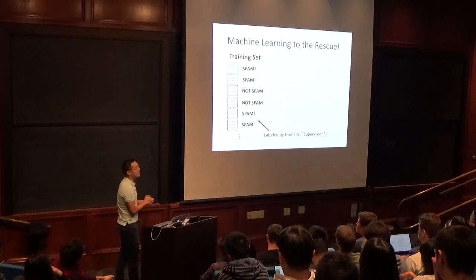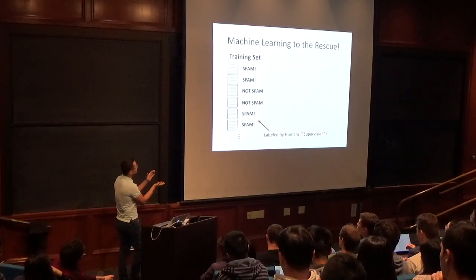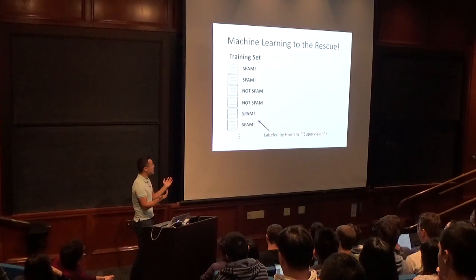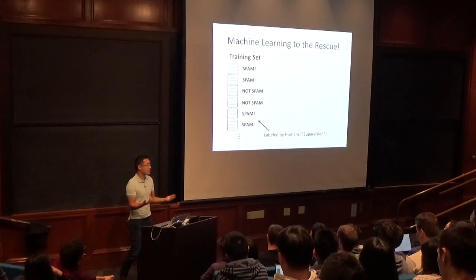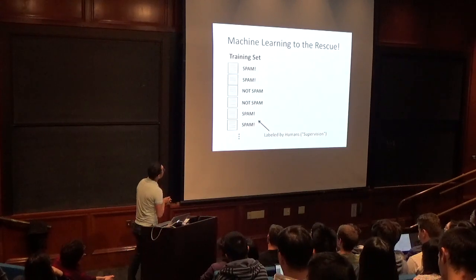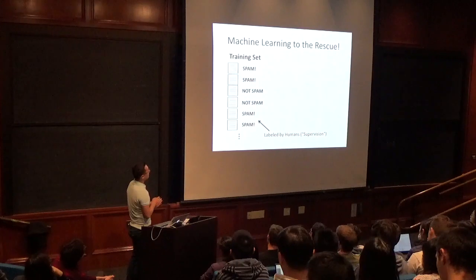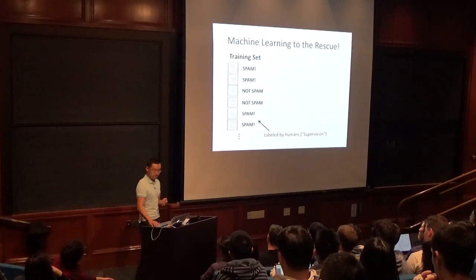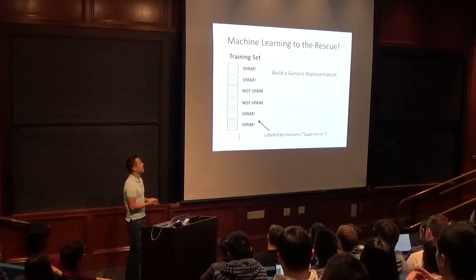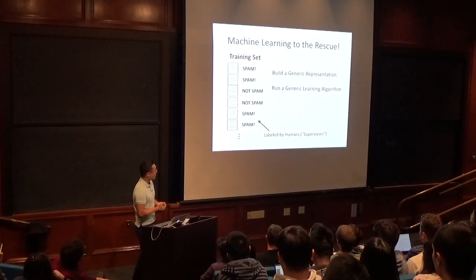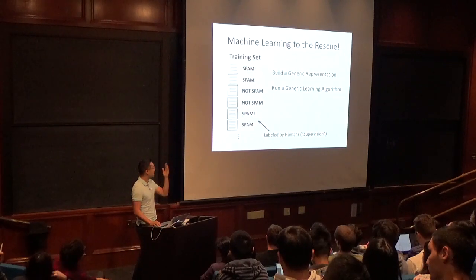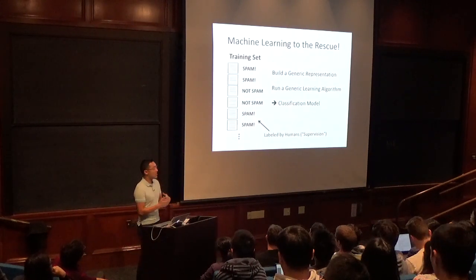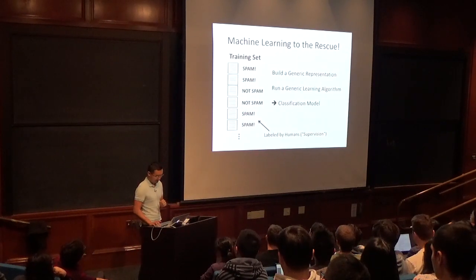To use machine learning for spam filtering, we apply supervised learning. We collect a training set of emails labeled spam or not spam — relatively easy for humans to provide. The emails are the raw data X, and the spam/not-spam labels are the binary supervised labels Y. Step one: build a representation of the raw data. Step two: run a learning algorithm on the supervised training set to produce a classification model.